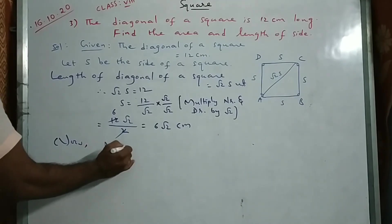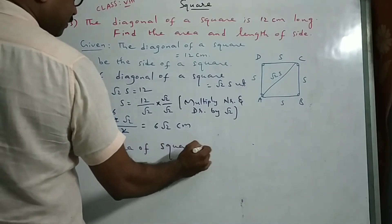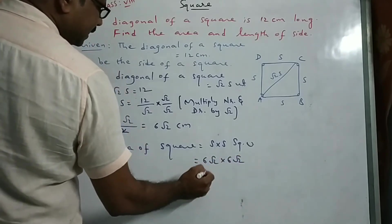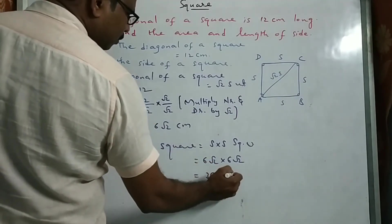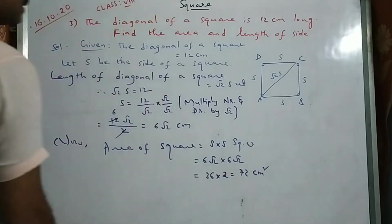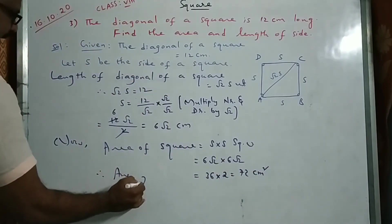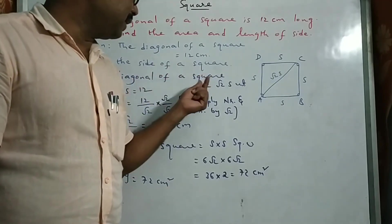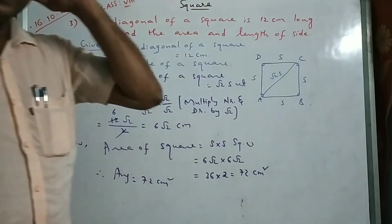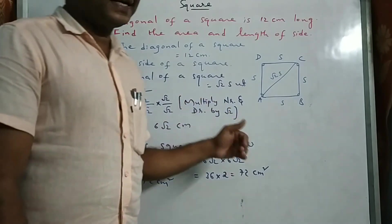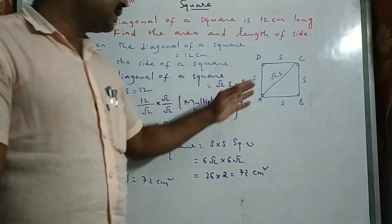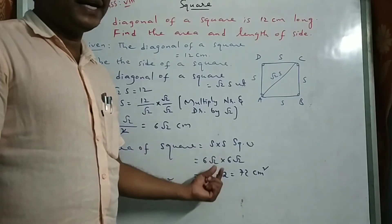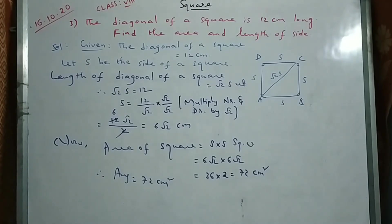Now we can find the area. Area of square equals side into side, which is 6 root 2 into 6 root 2. That is 36 times 2, which equals 72 square centimeters. Therefore the answer is 72 square centimeters. We used two formulas: length of diagonal of a square equals root 2 times side; and for rectangle it was square root of L squared plus B squared. We got the side and found area as side into side.